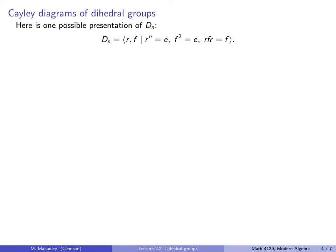So here is one possible group presentation of D_N. It is generated by R and F subject to the relations that R to the N is the identity — so if you rotate N times, you get the identity — and F squared is the identity, so if you flip twice, that's like doing nothing. And then there is the curious relation that R, F, R equals F.